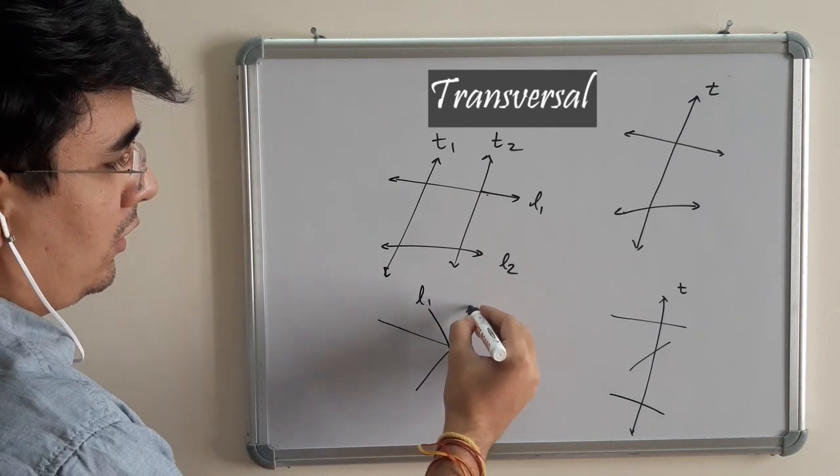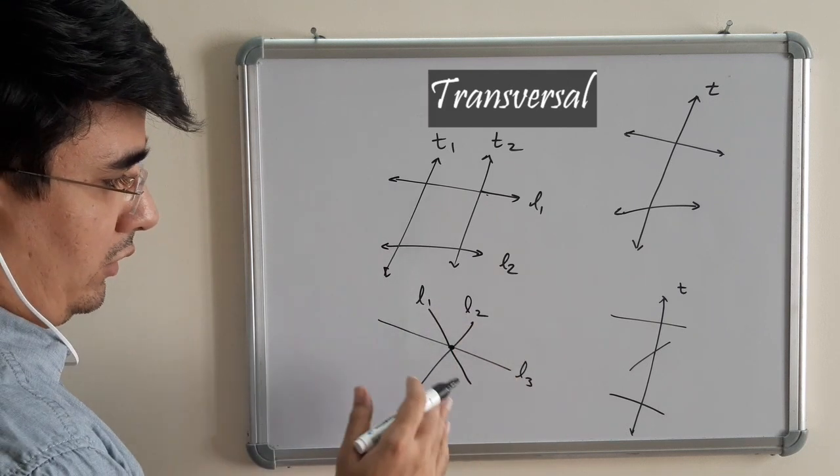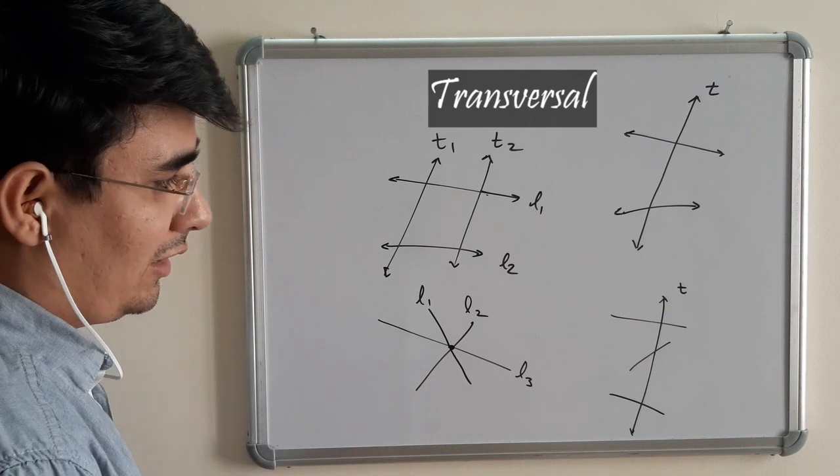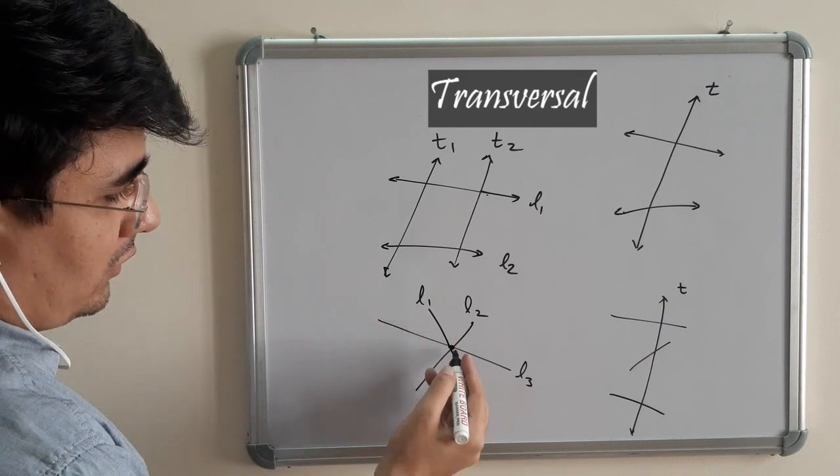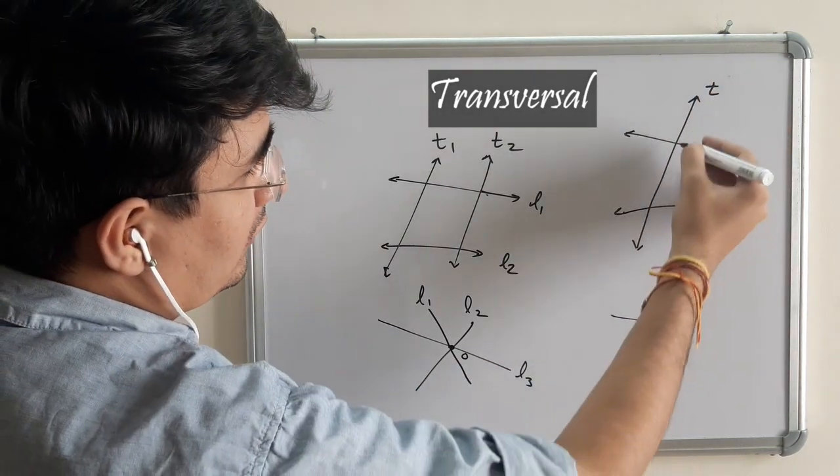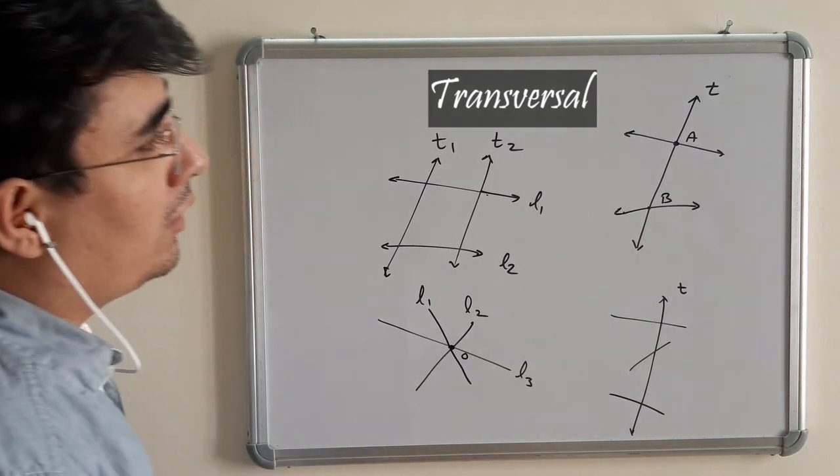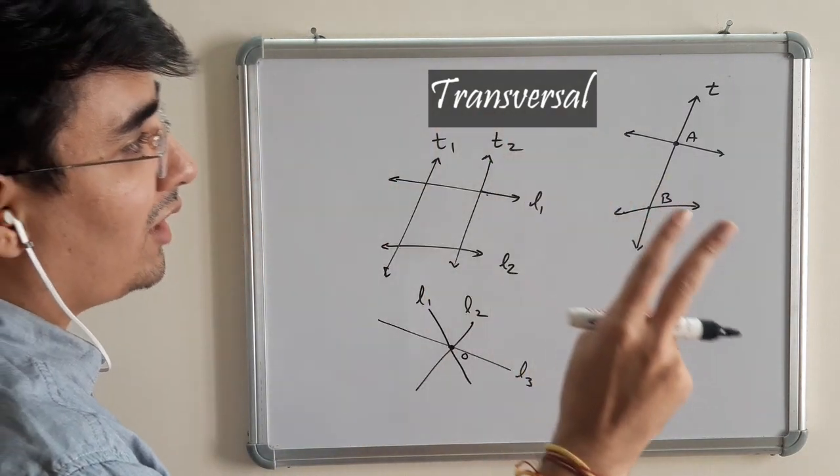There is no transversal in this particular figure. Okay. There are line 1, line 2 and line 3. But there is no transversal. There are intersecting lines. Okay. They are intersecting at point O. But they are not intersecting at two points. Like this T is intersecting at point A and point B. There are two different points, two different lines.